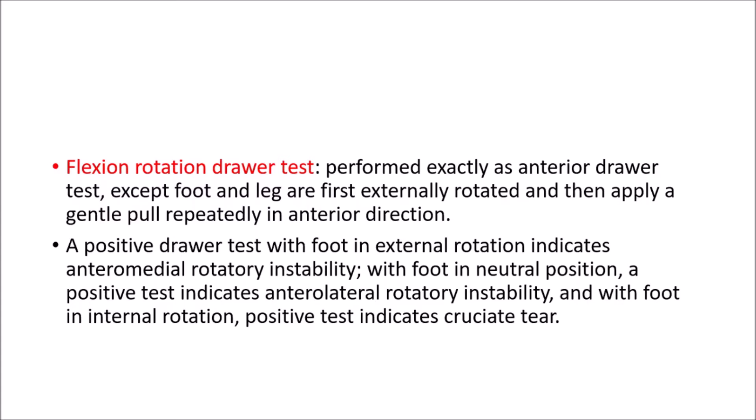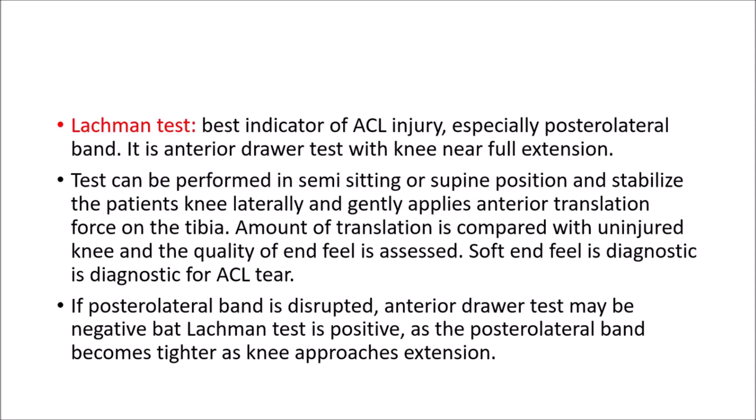The flexion rotation draw test is performed exactly like the straight anterior draw test except the foot and leg are first externally rotated, allowing the examiner to assess rotatory instability as well. In each position the examiner provides a gentle pull repeatedly in the anterior direction and each lower extremity is tested and compared. A positive anterior draw test with the foot in external rotation indicates anteromedial rotatory instability. With the foot in neutral, a positive test indicates anterolateral rotatory instability, and with the foot in internal rotation a positive test indicates a cruciate tear.